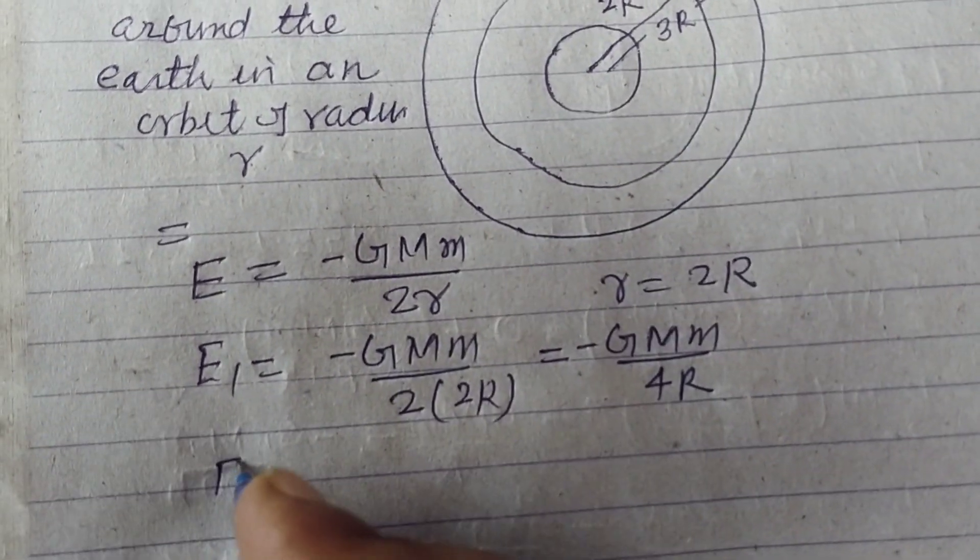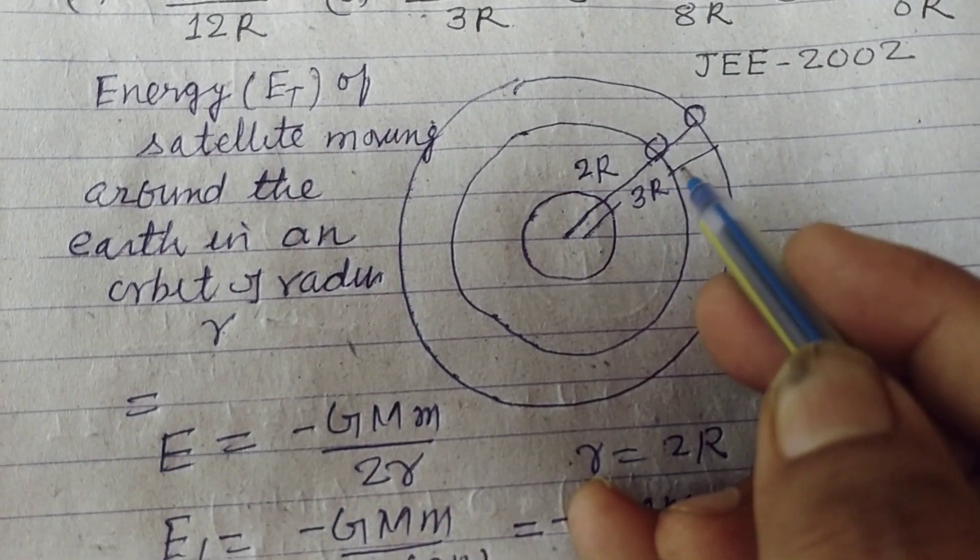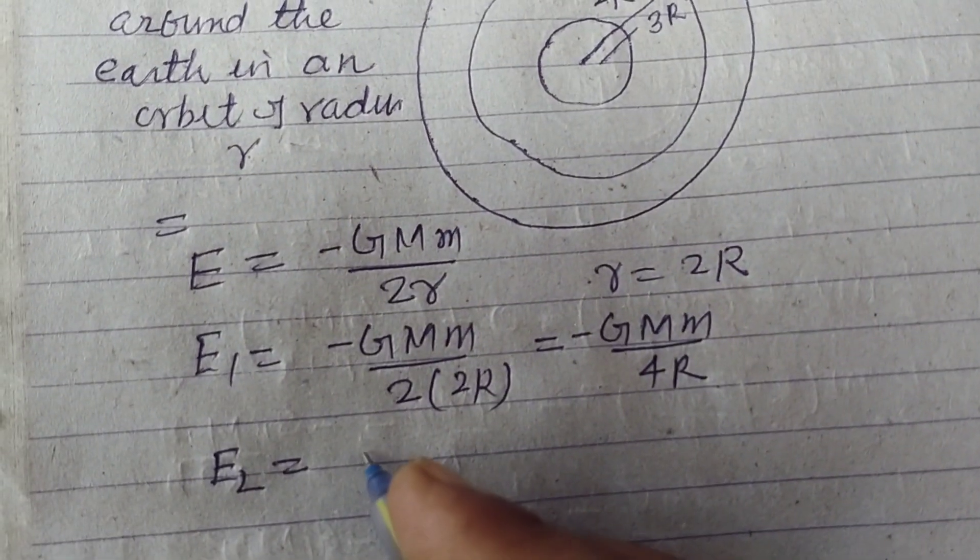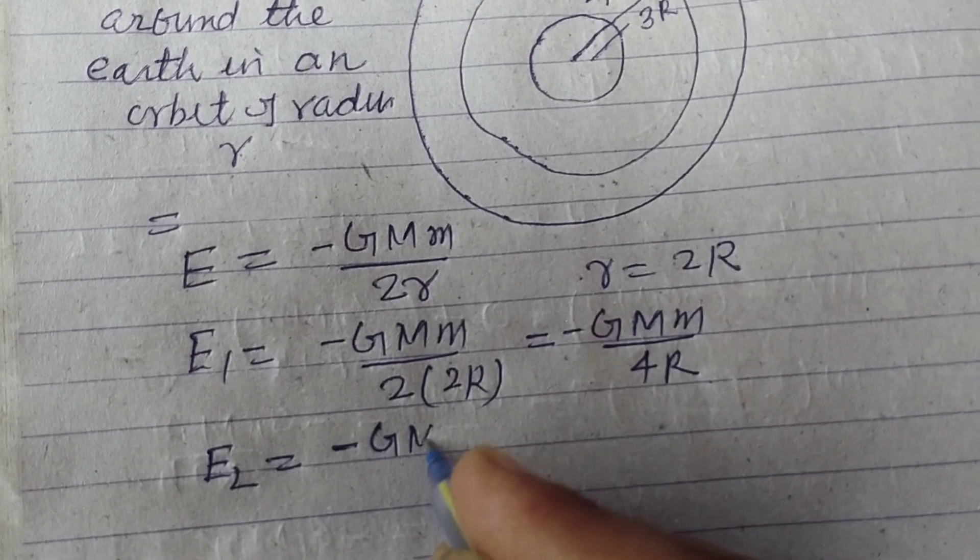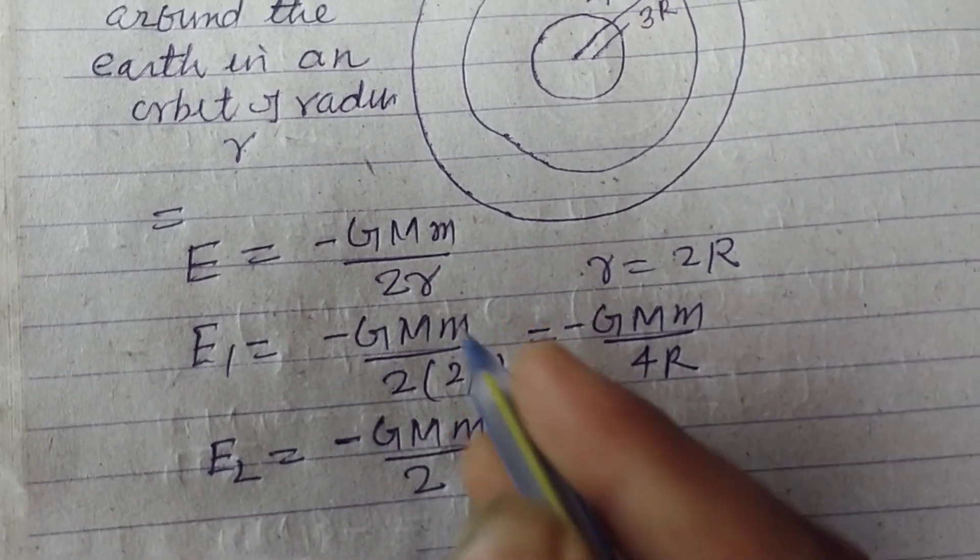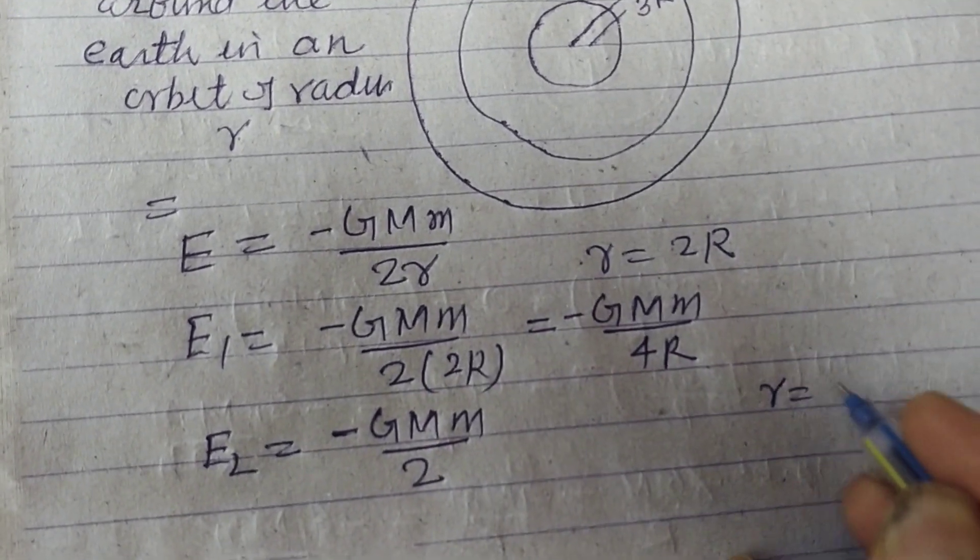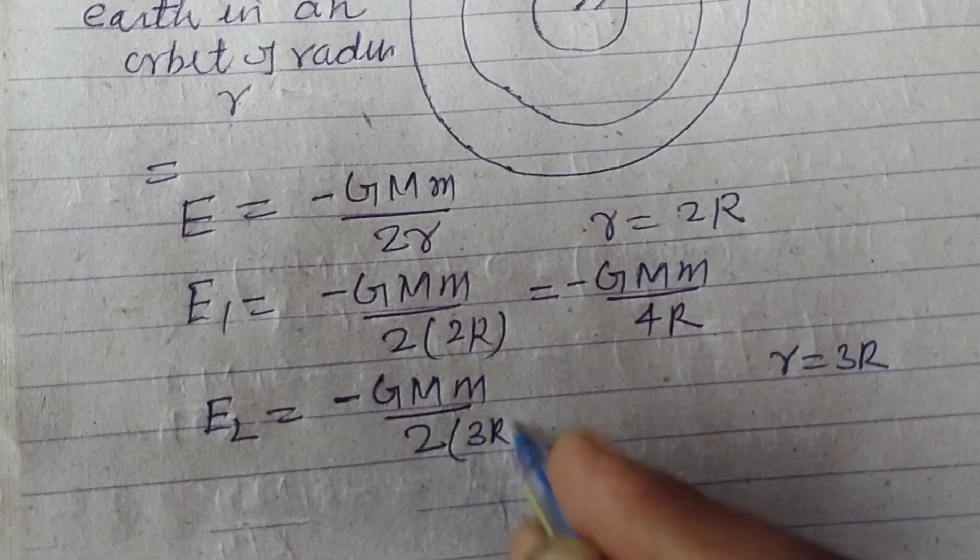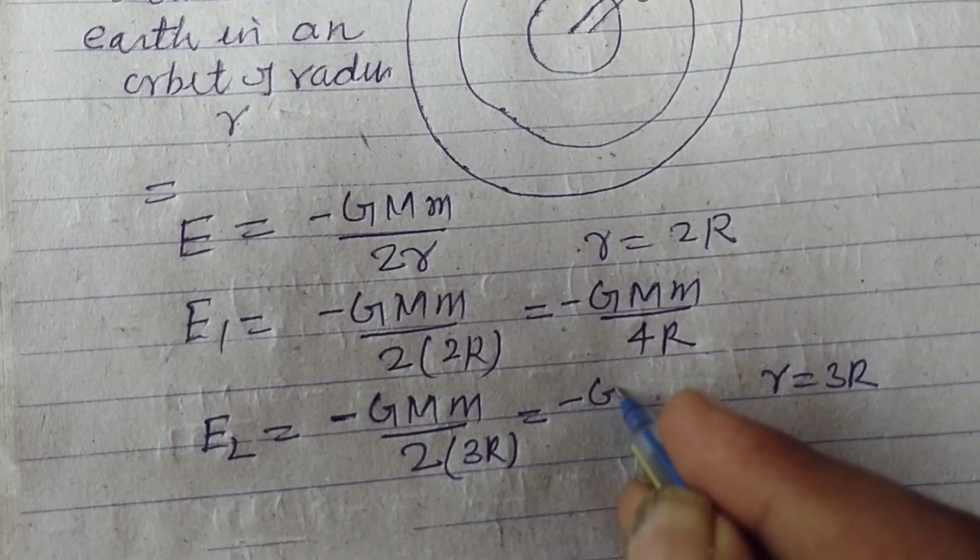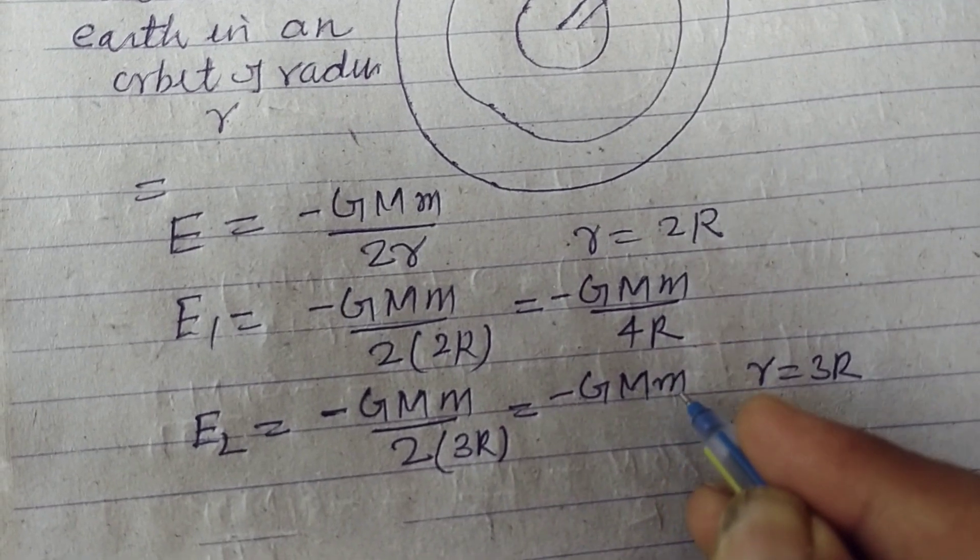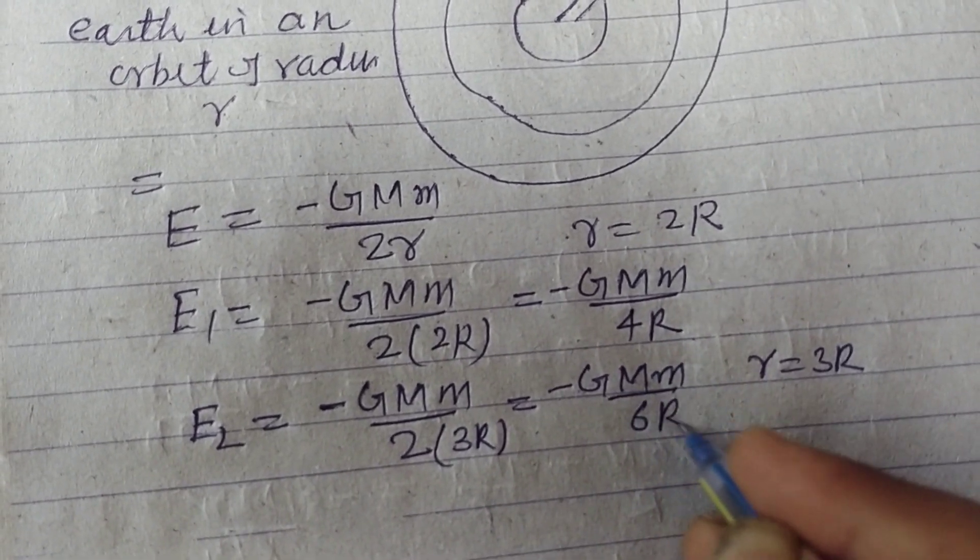Now energy when it reached in the orbit of 3R radius. So minus GMm upon, E2, we put R equal to 3R now. So 2 into 3R, this will be GMm upon 6R.